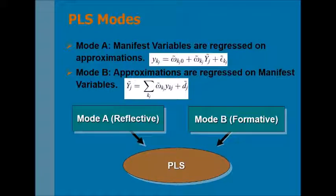There are two modes in PLS. In Mode A, manifest variables are regressed on approximations as shown in the equation. In Mode B, approximations are regressed on manifest variables as shown in the second equation. Mode A is also called the reflective model, and Mode B is also called the formative model.